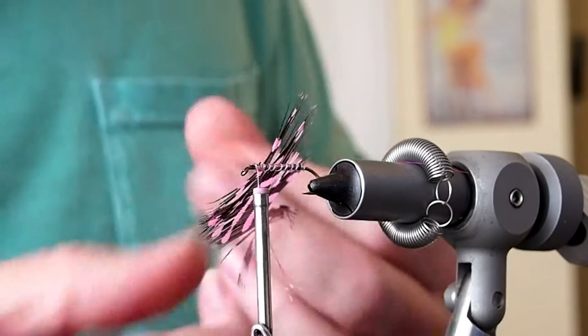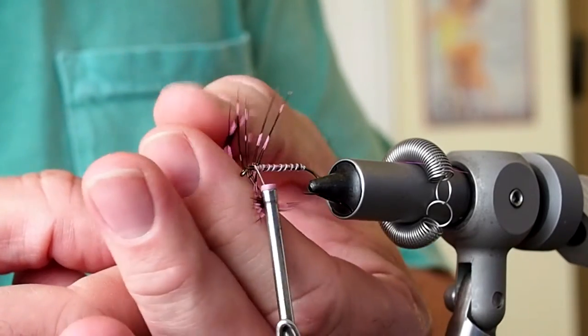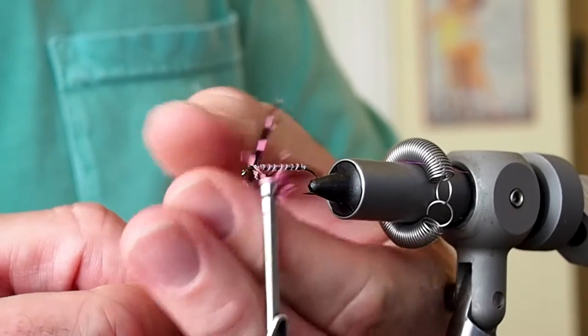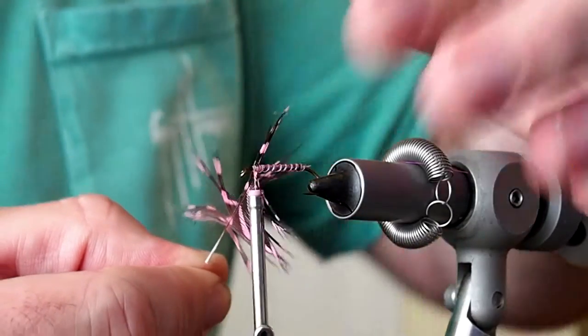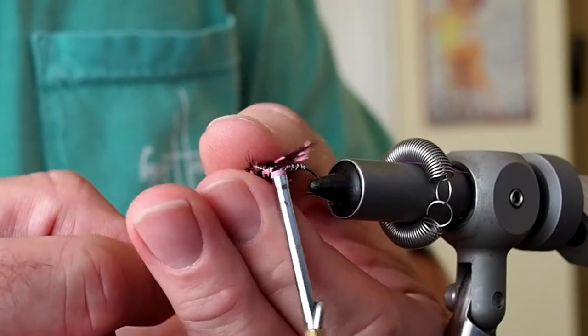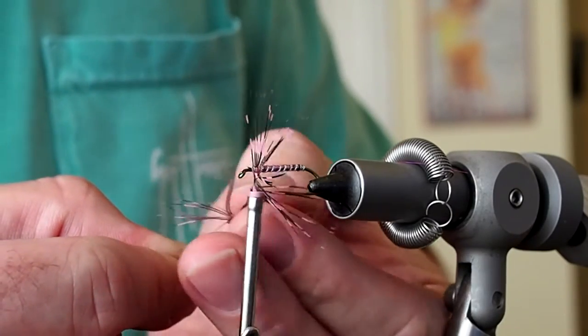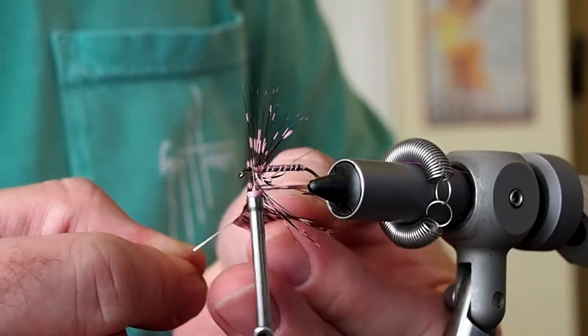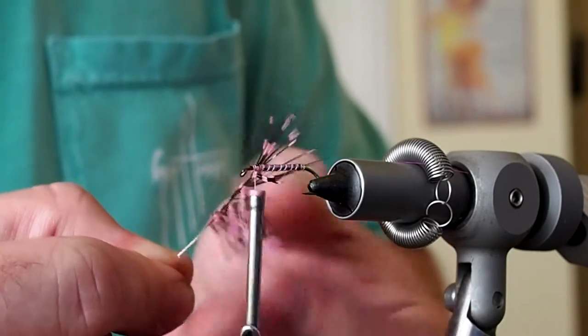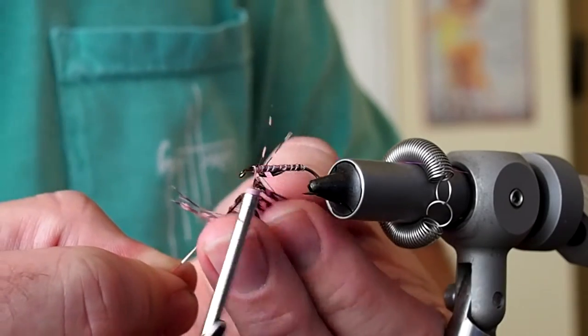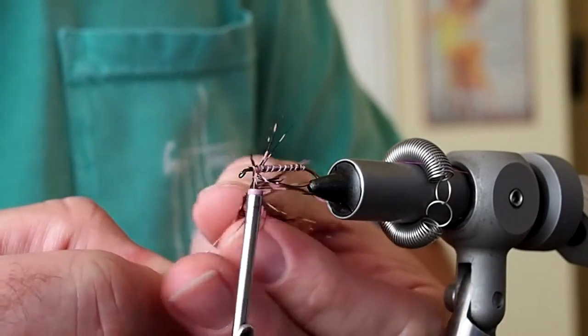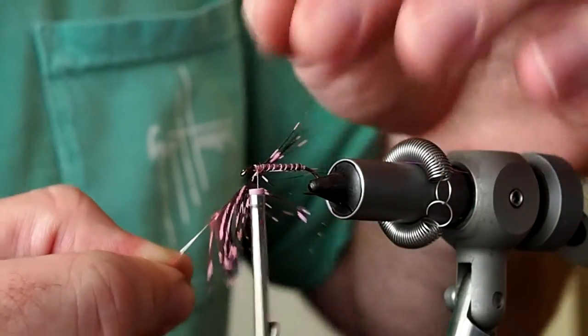And you want to stroke those hackle fibers back. Try to get them all laid back. And just take your time. You're almost folding the barbs in half across the stem. And you just want to get them all laid backwards, back towards the bend of the hook.